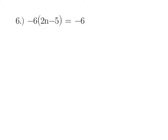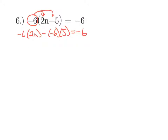Last example: negative 6 times (2n minus 5) equals negative 6. When we distribute, we want to distribute the entire negative 6 — not just the 6, but the negative 6 — to both terms inside. So we have negative 6 times 2n, minus negative 6 times 5, equals negative 6. Take your time with this multiplication: negative 6 times 2 is negative 12, and minus a negative becomes plus, so 6 times 5 is 30. That gives us negative 12n plus 30 equals negative 6.